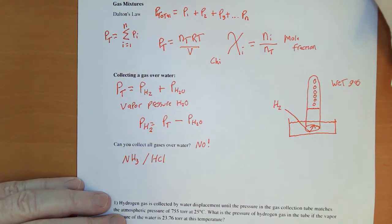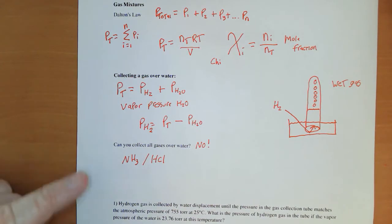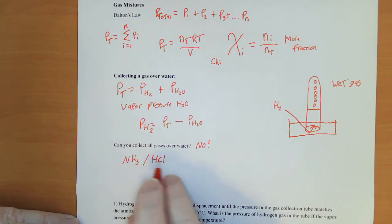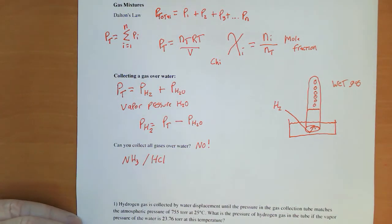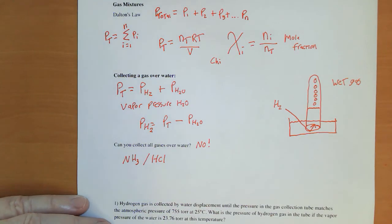Because of that, they would just dissolve in this and never make it up there. Carbon dioxide to a small extent will dissolve a little bit in water, but nothing compared to NH3 and HCl. Both of these are polar molecules and water is a polar solvent.